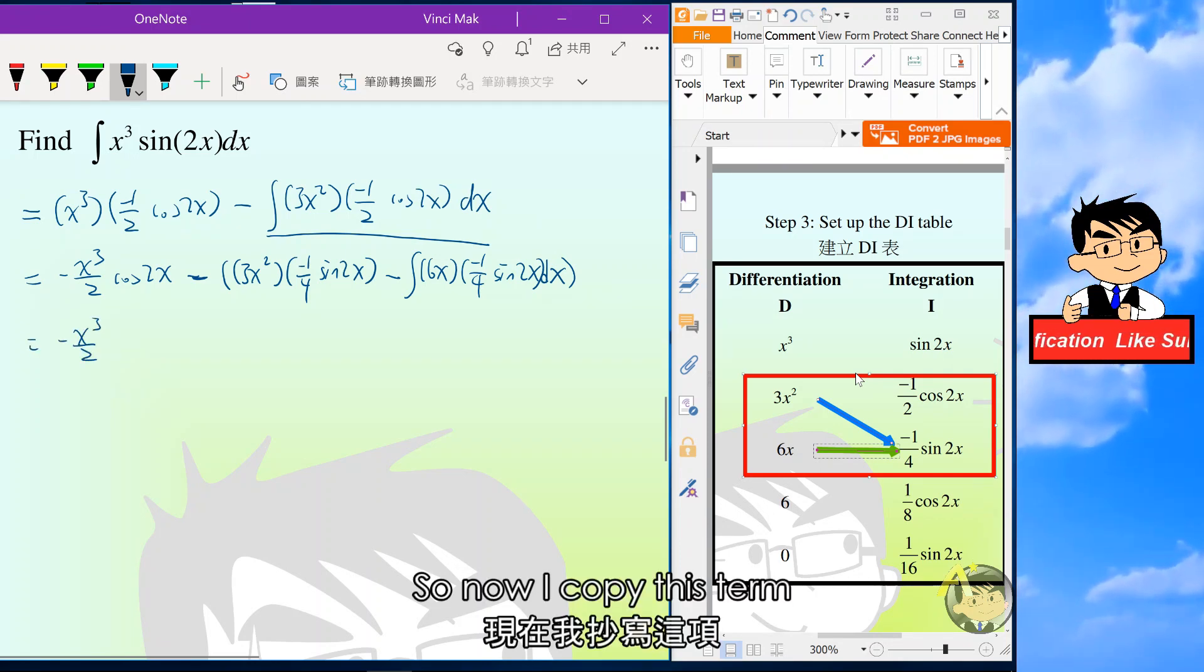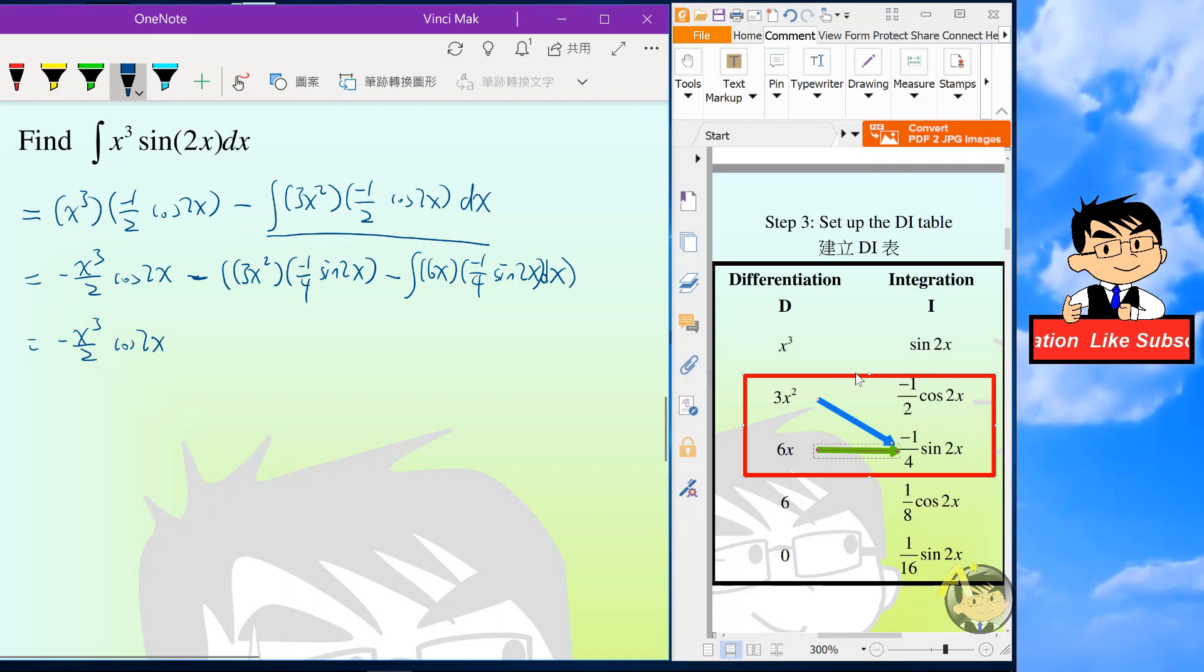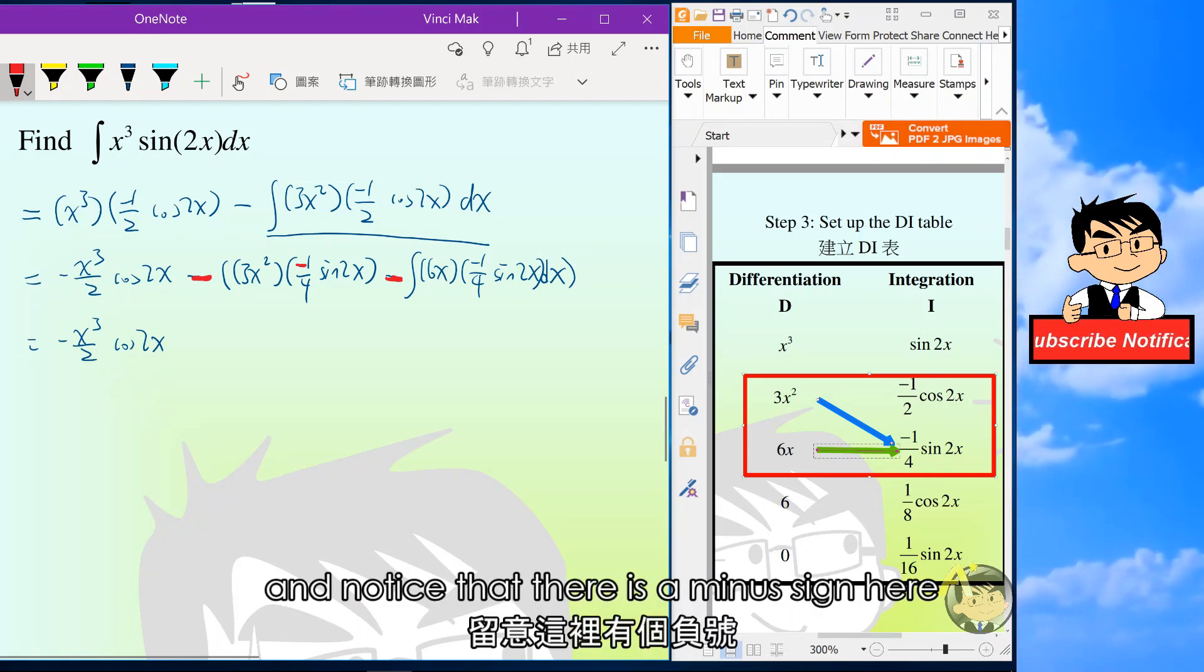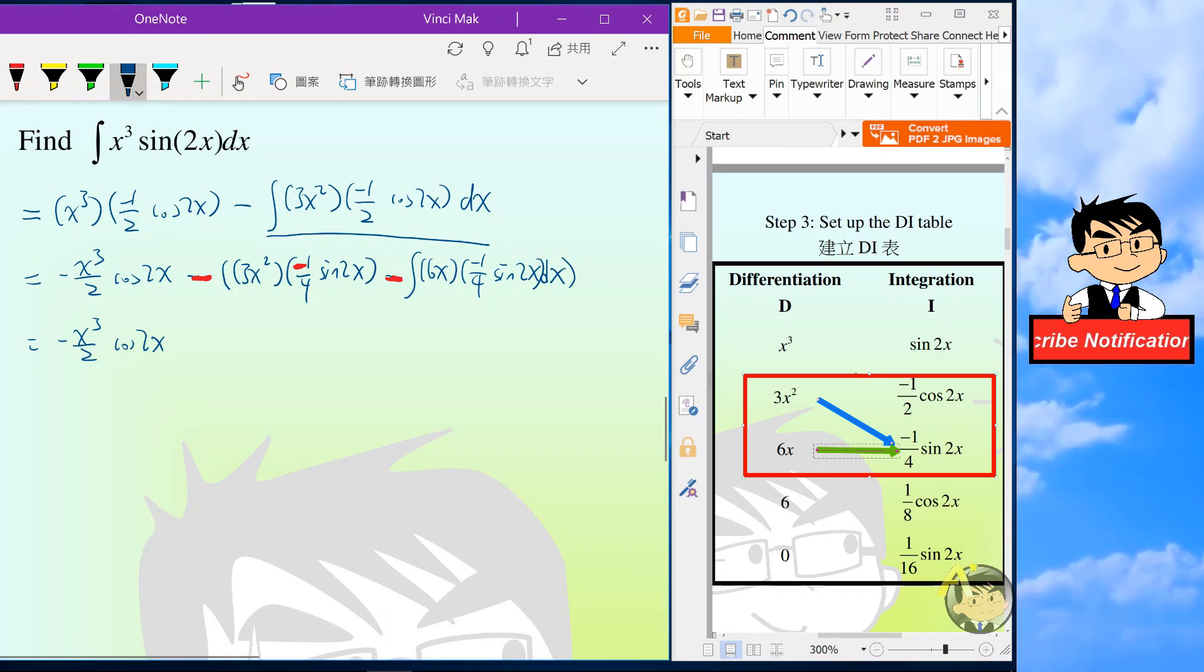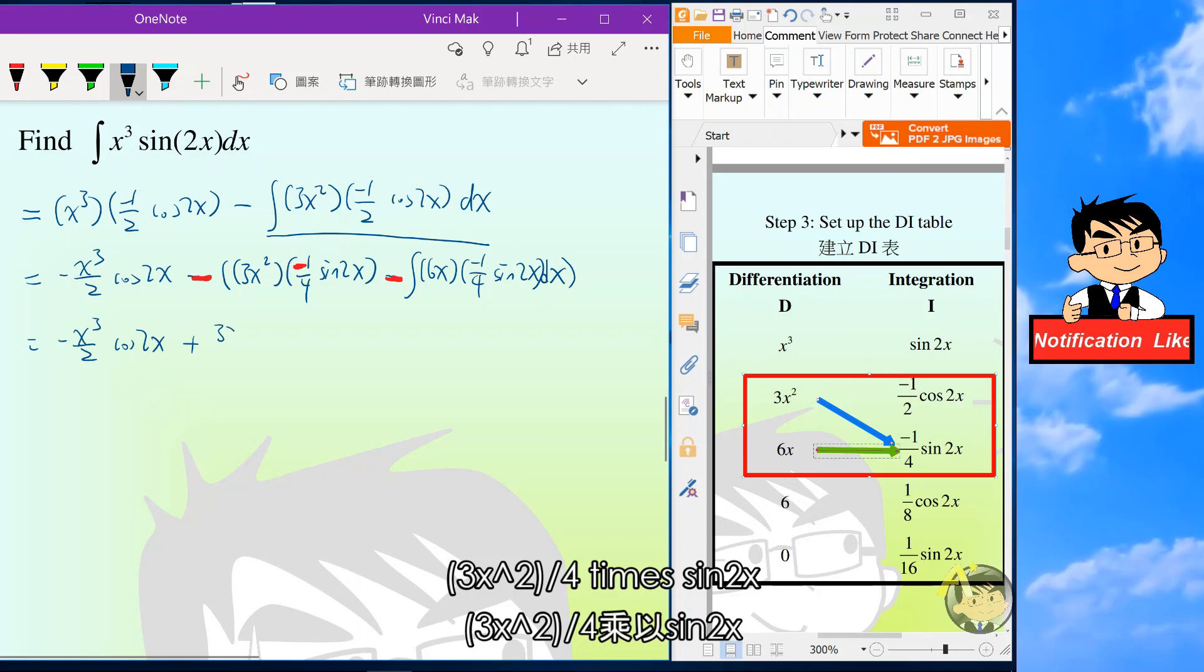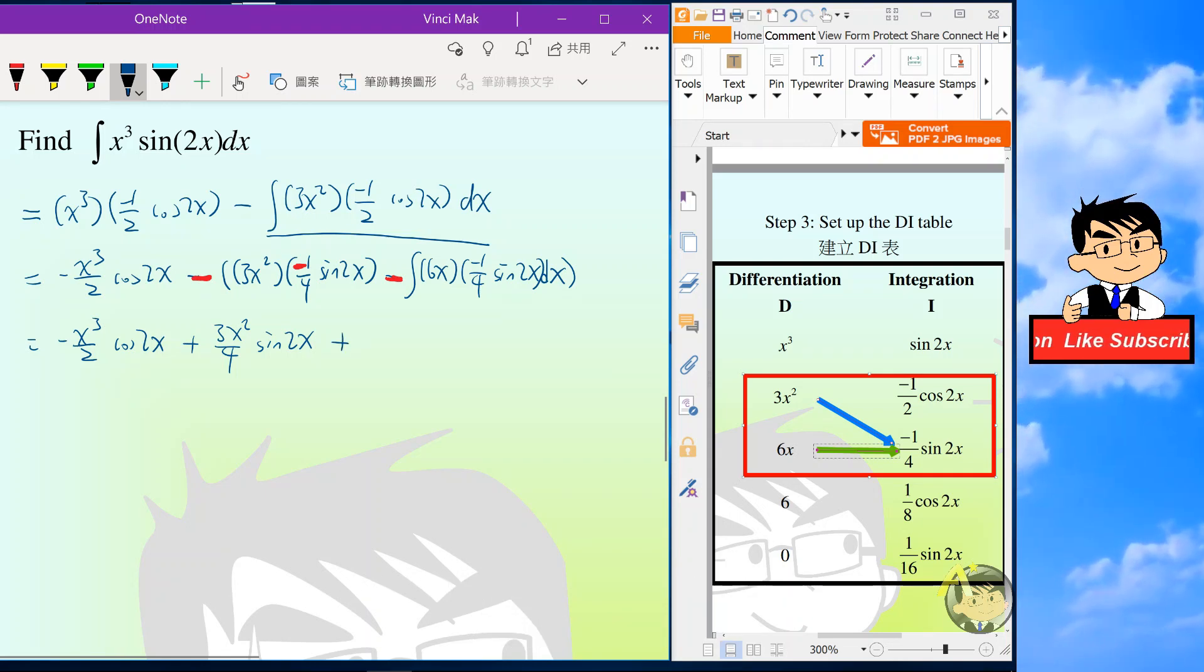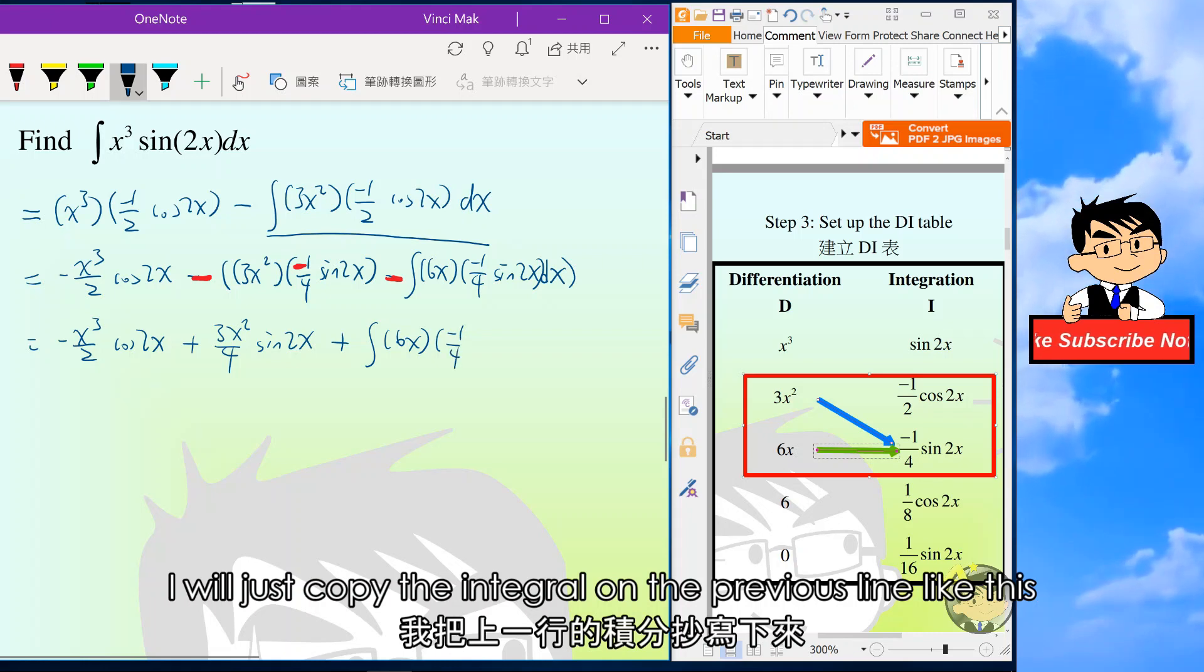So now I will copy this term and then I will remove the brackets. And notice that there is a minus sign here, so the second term will be positive: 3x squared over 4 times sine 2x. And the last term is also positive. I will just copy the integral on the previous line like this.